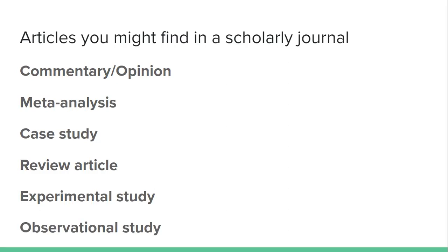Another type of primary research are observational studies, where researchers look at a population and collect information on factors affecting that population — for example, a study looking at PTSD and alcoholism among veterans. To review, meta-analyses, experimental studies, and observational studies are all different types of primary research.